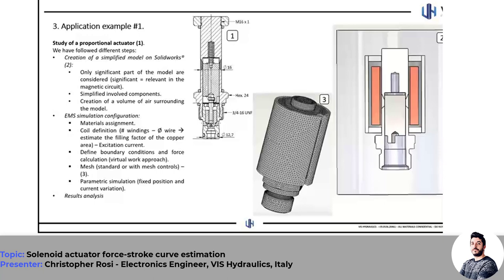You assign materials to each element to best fit the real device behavior. Then you define the coil in terms of physical parameters — number of windings and wire diameter to estimate the copper area filling factor — and in terms of electrical excitation by defining the injected current or voltage. You also define boundary conditions, specify the element on which to calculate the force, create the mesh (standard or refined using mesh controls), and finally launch the simulation.